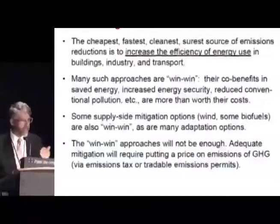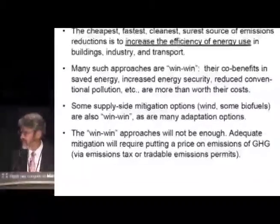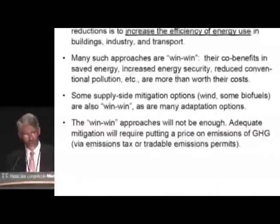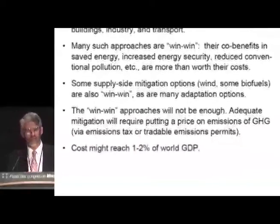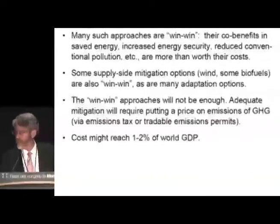Adequate mitigation — mitigation that has a chance of keeping us below an increase of 2 degrees C above the pre-industrial level — is going to require putting a significant price on emissions of greenhouse gases, either via an emissions tax or via tradable emissions permits. The cost of doing that might well reach 1 to 2% of the world's GDP — maybe 1% in 2050, 2% in 2100. It's real money, but as the Stern report has pointed out and as the IPCC's mitigation report emphasizes, it is likely to be small compared to the damages to the world economy and human well-being if we do not solve this problem.